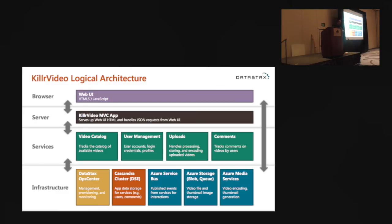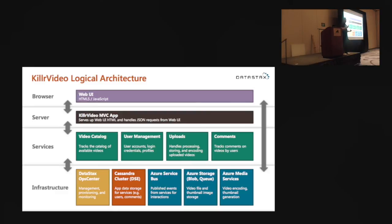This is the logical architecture of the demo. Top layer: a web UI with HTML5 and JavaScript. On the server level: an ASP.NET MVC app serving up the web UI, answering JSON requests. Then underneath, a tier of services — video catalog, user management, and others. I think there are eight or nine total, grouped by business capabilities — what does it actually do for the site? The video catalog tracks available videos. The upload service handles processing of uploaded videos — taking them from some source format and converting them for playback in a browser or mobile device, including re-encoding and generating thumbnail previews.